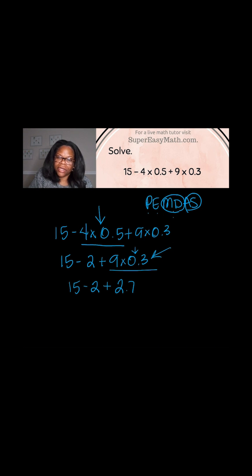Now I'm done with multiplication and division, and the next thing I have to solve is addition and subtraction. So from left to right, I have subtraction. So 15 minus 2 is 13 plus 2.7, which gives me 15.7. So that means 15.7 is my final answer.